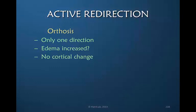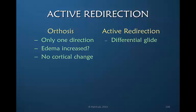There is no engagement in active motion with a passive orthosis. Active redirection, however, gives us an entirely different scenario: there is differential glide in reciprocal directions, which is what normal motion is all about. The edema is reduced because pumping is increased, and cortical remapping occurs because the maladaptive pattern cannot be revisited. Motion is directed to the stiffest joint, activating the muscles that need to be activated.